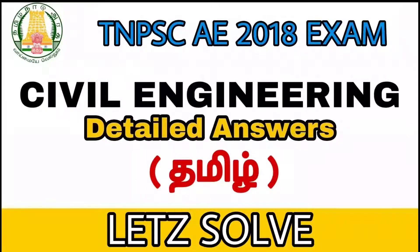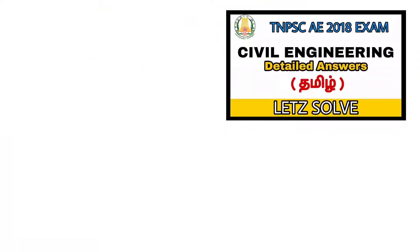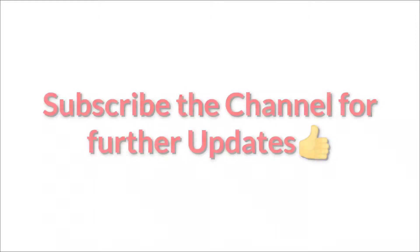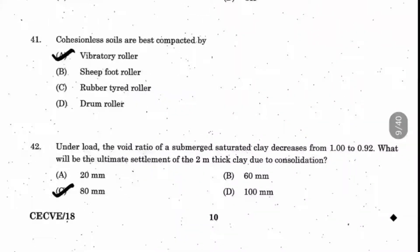TNPSC AE 2018 exam civil engineering question paper. Question 41: Cohesionless soils are compacted by which roller? Cohesionless and sandy soils are the same. Generally, sandy gravel soils give the best compaction. So, option A is the right answer.